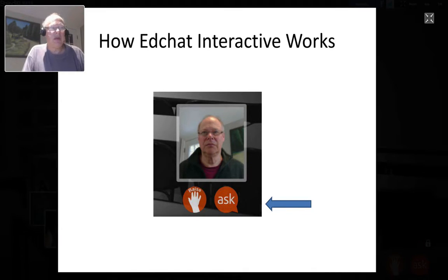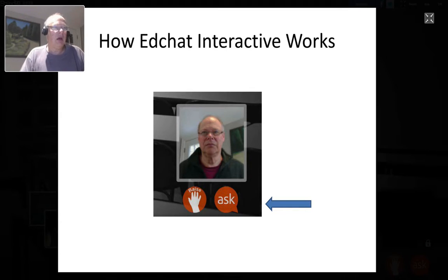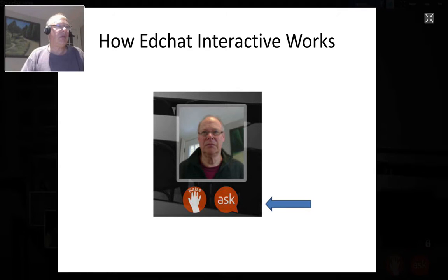To make this interactive, we use the Shindig platform, which provides a number of ways of interacting I've never seen in a webinar platform before. The first is the raise hand button underneath your avatar — it allows me to find you so I can click on your avatar and talk to you either by text or video. The ask button allows you to ask a question. If it's a technical question I can answer it directly, but generally I'll pass it to Howard.